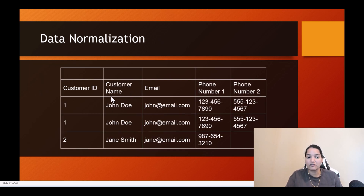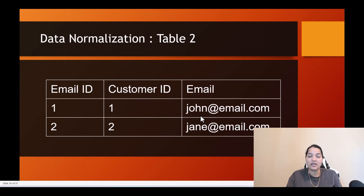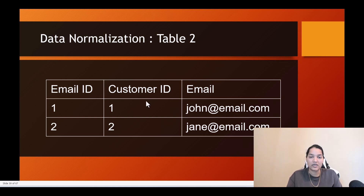In the original data we had two John Doe entries, so we figured out we need to remove the duplicate. We created a table which only stores the unique customer ID and the customer name corresponding to it. Then we created table number two, which holds only the email addresses tied back to the customer ID. The email ID is the unique key of table number two. So customer ID one has an email address of john@email.com. If customer one had multiple email addresses, it would be simple — customer ID one could have john@yahoo.com and john121@gmail.com stored in that table.